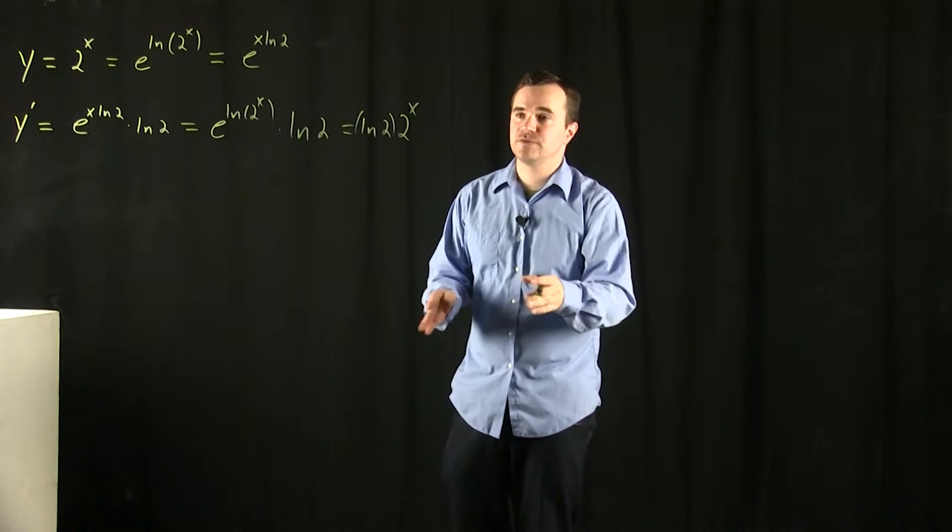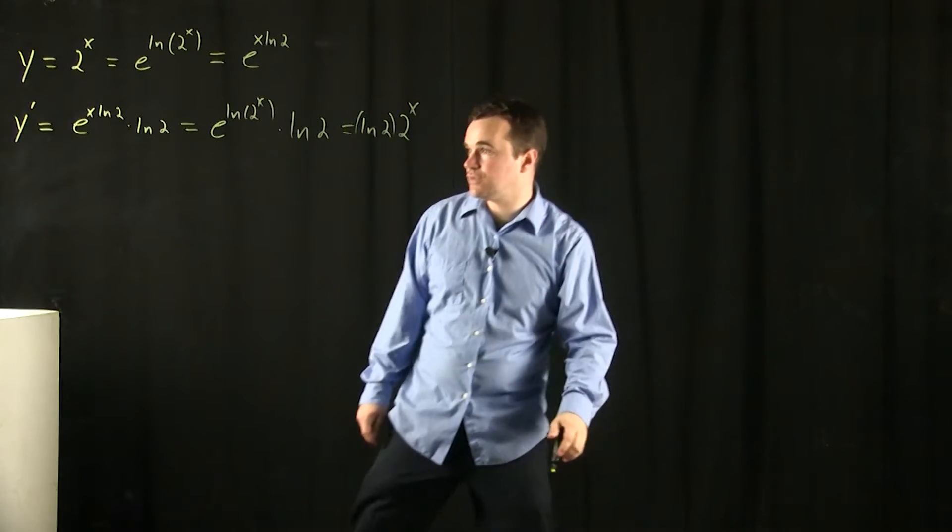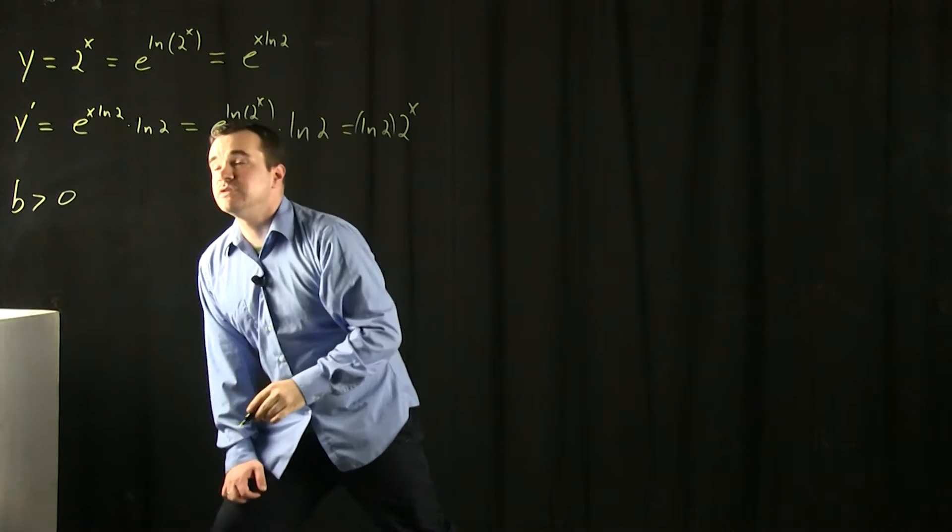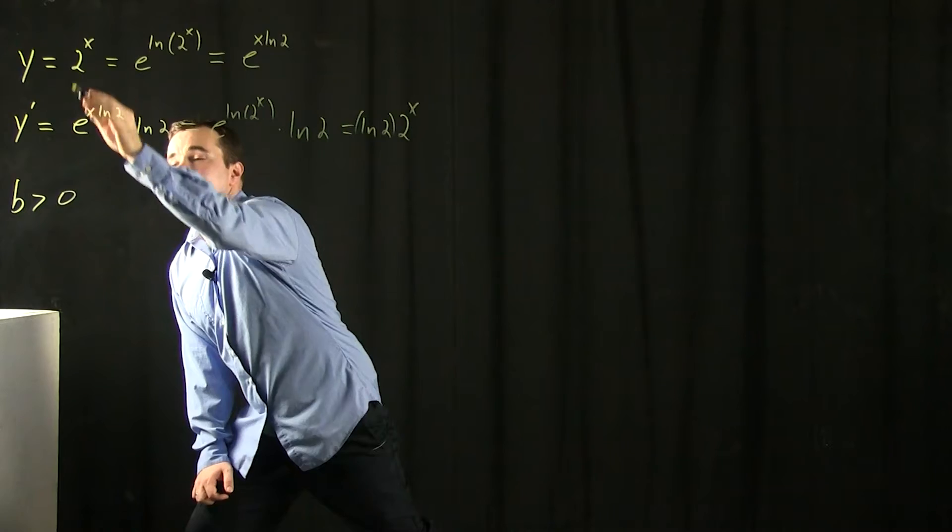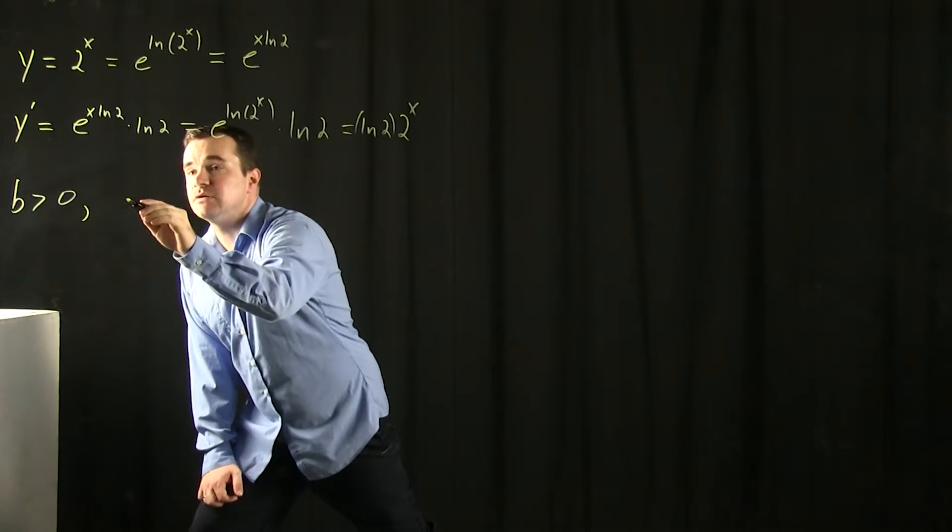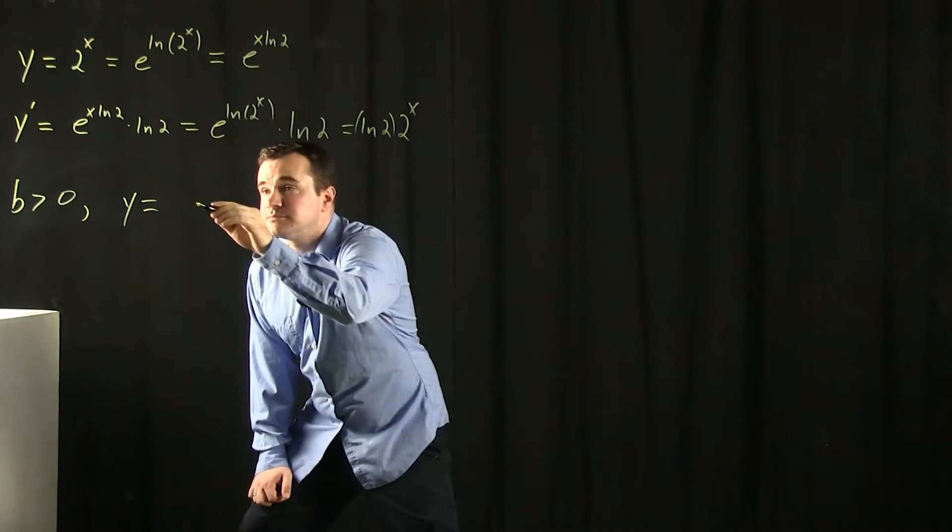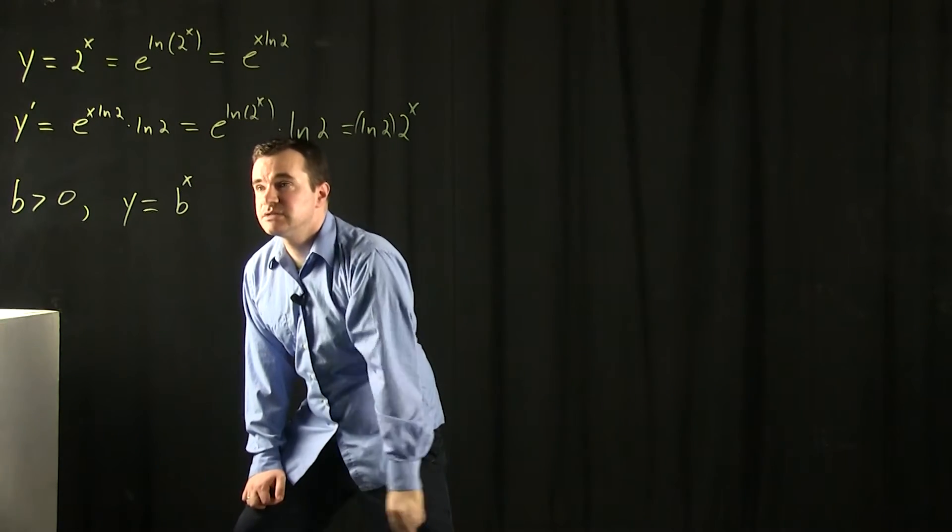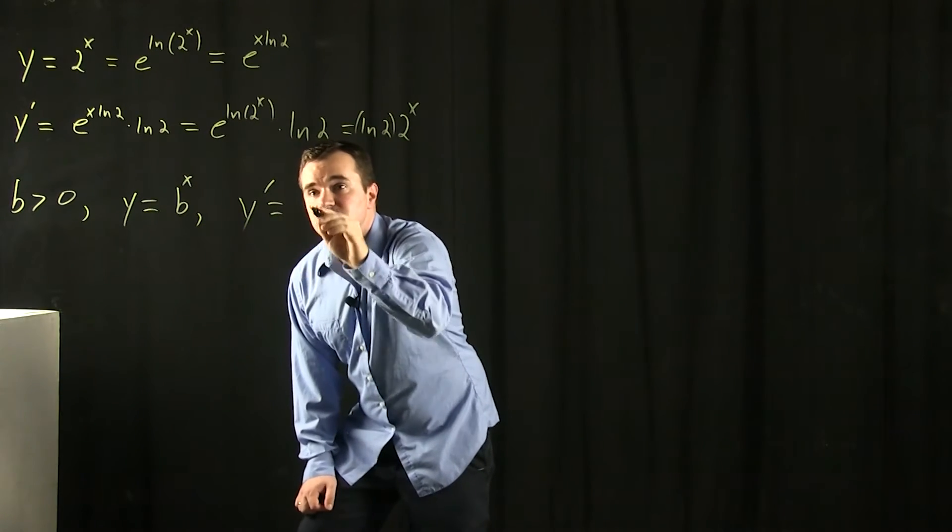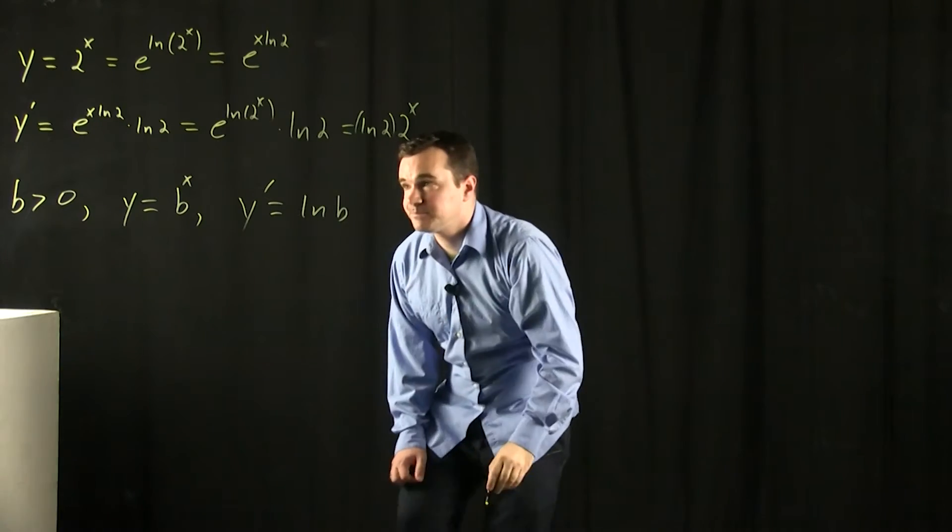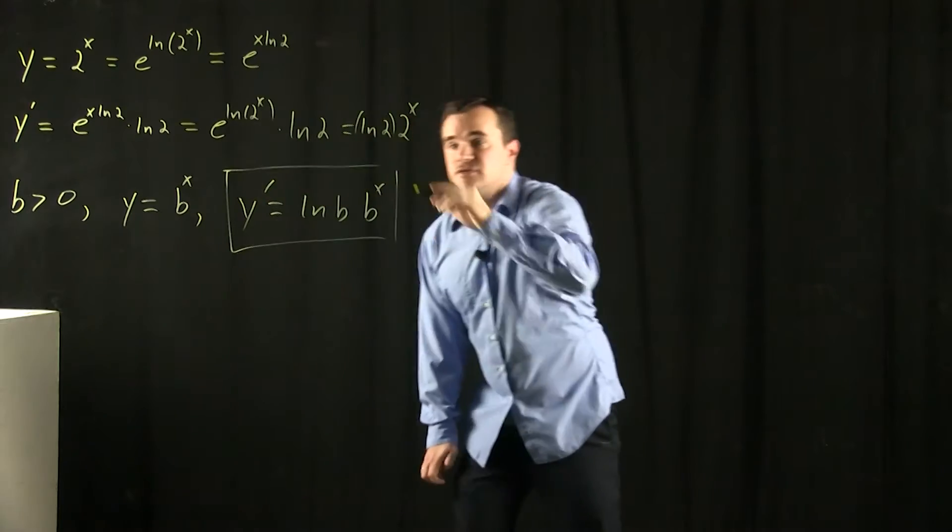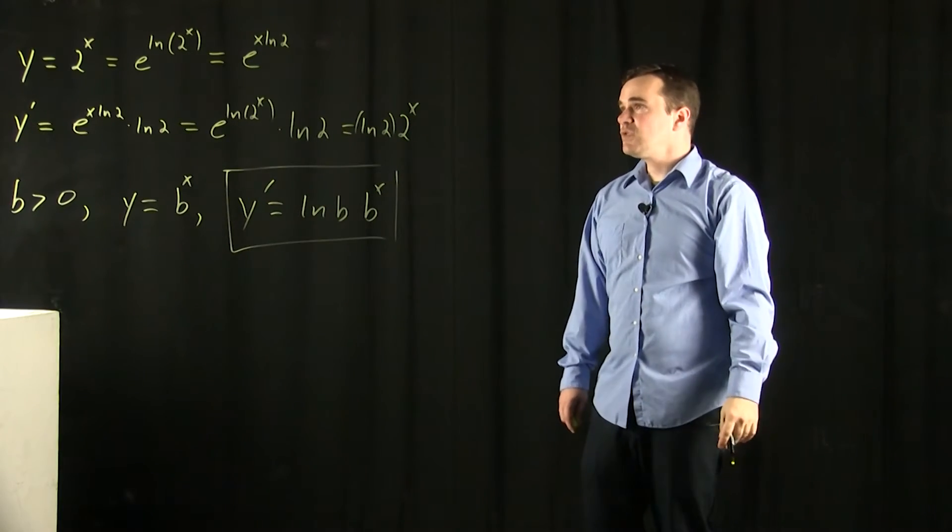So this is completely general. It works for any base other than 2. So if you have a base, any number bigger than zero, I just mean base because that's the number you're then exponentiating. So you can consider y equals b to the x by completely the same reasoning. The derivative is going to be natural log of b times b to the x. So that's the general formula.